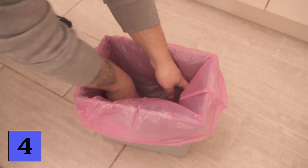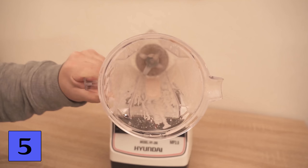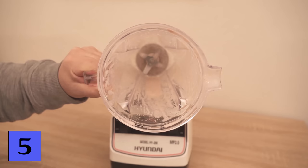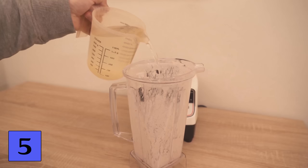For trick number 5 let's clean the blender. You probably know how it is when you have prepared a smoothie or something else in a blender. Afterwards it is quite dirty and cleaning such a blender is usually very exhausting and annoying. But it is much easier. You can completely clean such a blender in really 10 seconds.